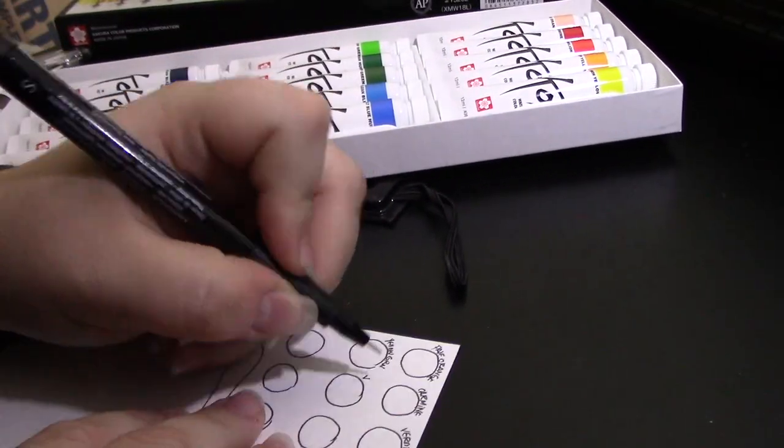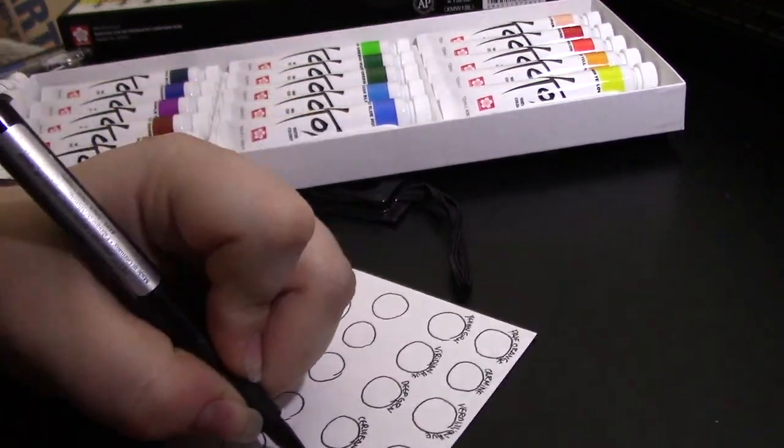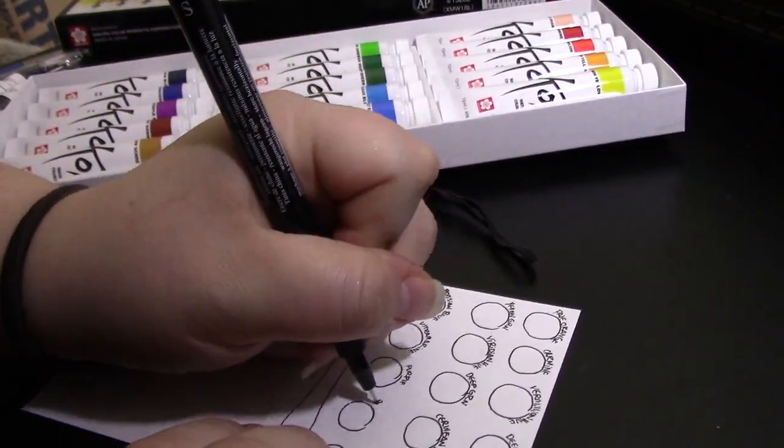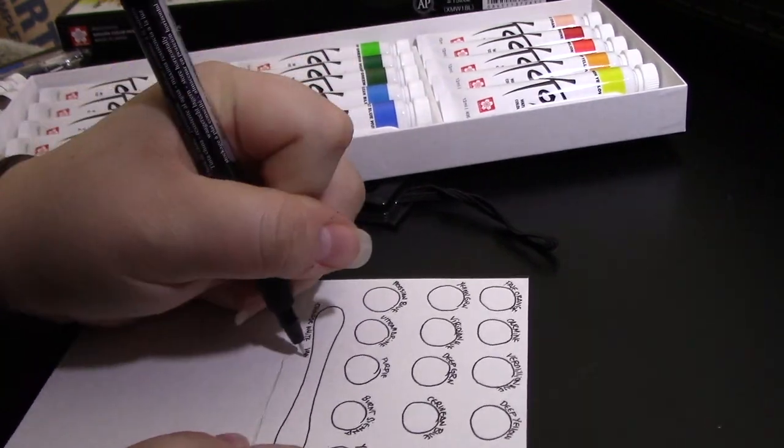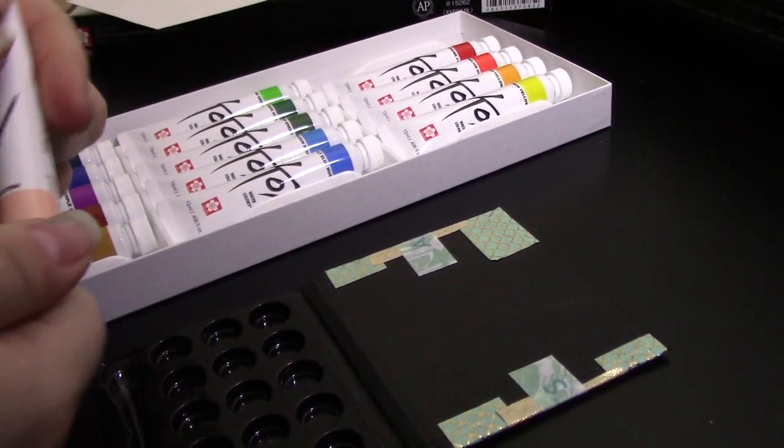After you've decided on the order that you want your paints in the palette, line them up and fill your sections. If any of the paints come out a little separated, just mix them with a palette knife or toothpick or something. They'll be fine in the end.